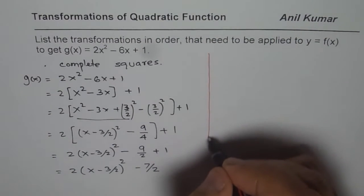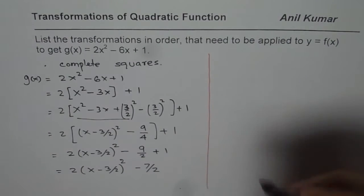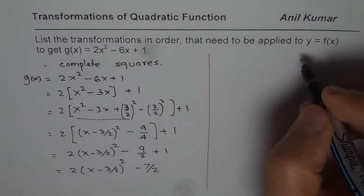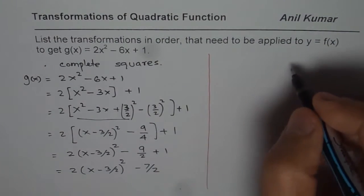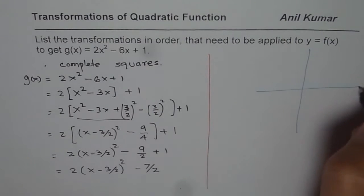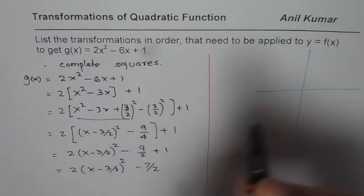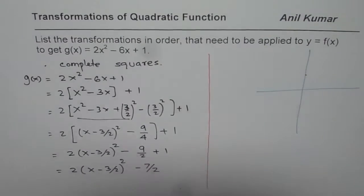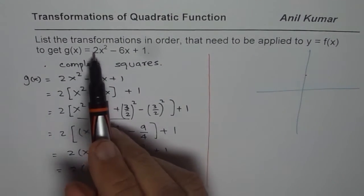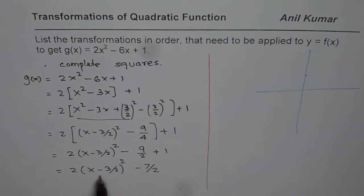Now, what do you have? You have a parabola which opens upwards. If x is 0, we know the y intercept is 1. That is a good point to check.